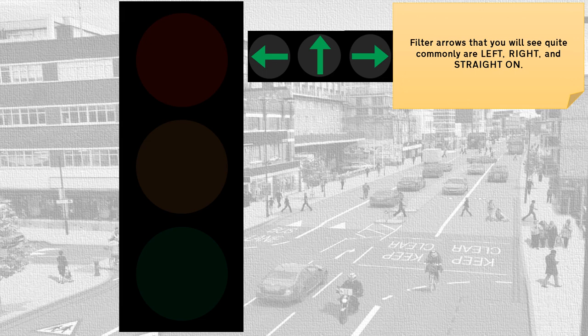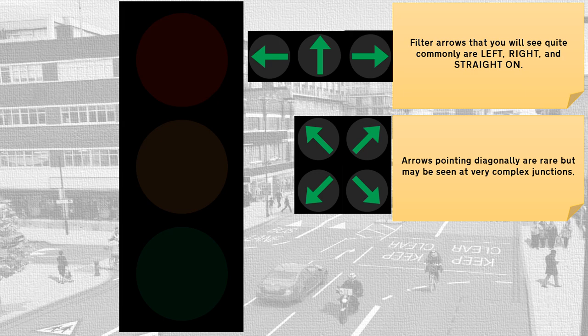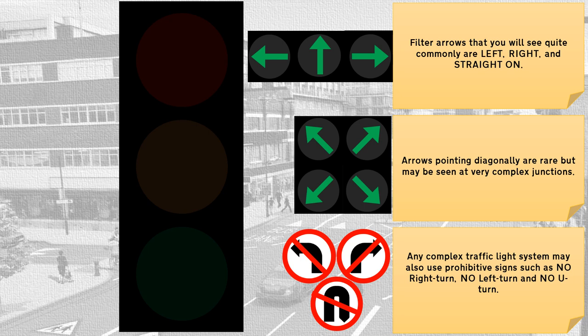Filter arrows that you will see quite commonly are left, right, and straight on. Arrows pointing diagonally are rare but may be seen at very complex junctions. Any complex traffic light system may also use prohibitive signs, such as no right turn, no left turn, and no U-turn.